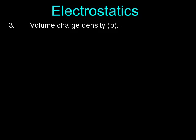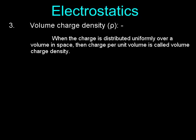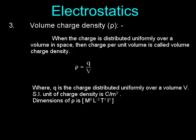Volume Charge Density (ρ): When the charge is distributed uniformly over a volume in space, the charge per unit volume is called volume charge density. ρ = q / V, where q is the charge distributed uniformly over a volume V. SI unit of charge density is C/m³.